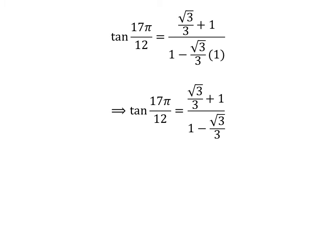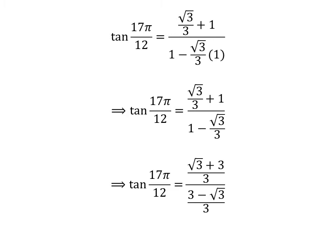Further simplification gives us tangent of 17 times pi upon 12 is equal to (√3/3 + 1) upon (1 minus √3/3). Adding the fractions gives us (√3 + 3)/3 upon (3 minus √3)/3.